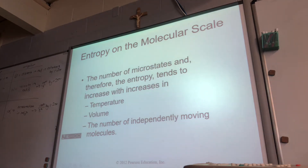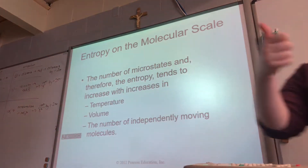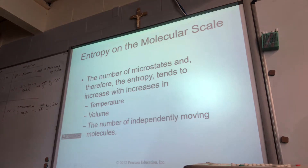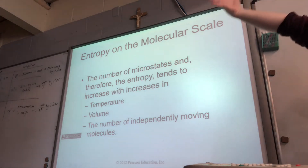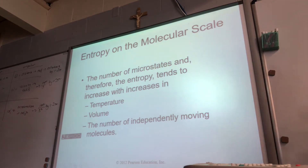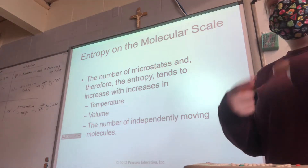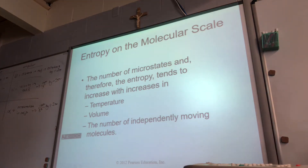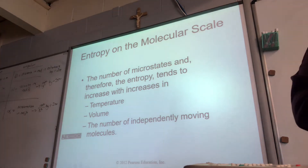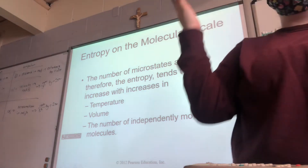How do we increase the number of microstates? The same way we change the amount of randomness in any situation. First, we can heat it up—molecules move faster, more microstates. Second, if we increase the volume or space over which molecules have to move, they have more room, meaning more randomness. Third is the number of molecules, usually indicated by moles. More moles means more movement as a whole—one particle moving has a set amount of motion, two particles have more.